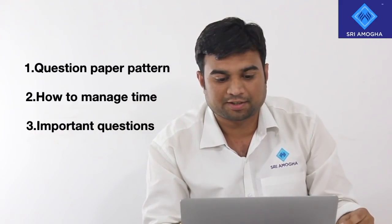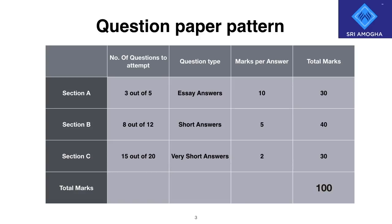Coming to the presentation, first you can see the question paper pattern. You have three sections - A, B, and C - and you can see four columns: number of questions to attempt, question type, marks per answer, and total marks.